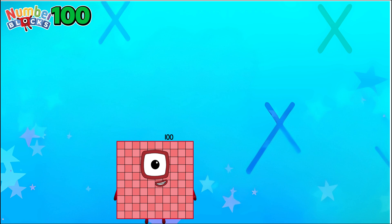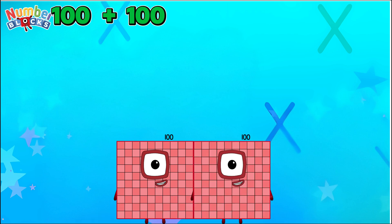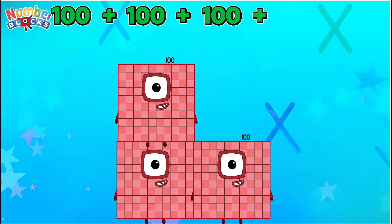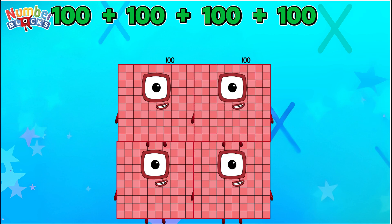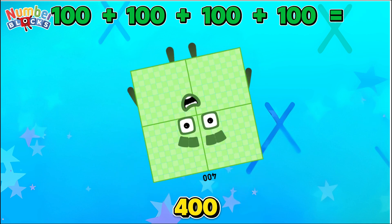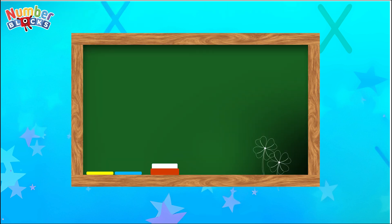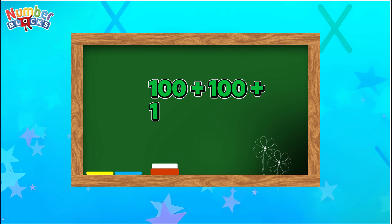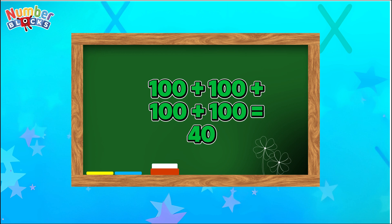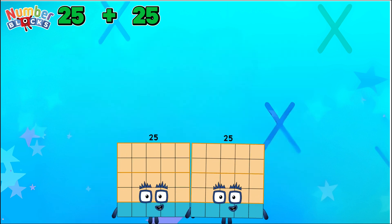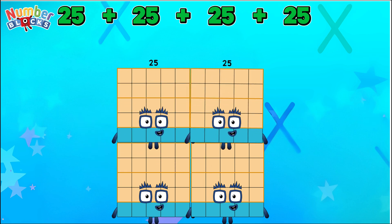100 plus 100 plus 100 plus 100 is equals to 400.